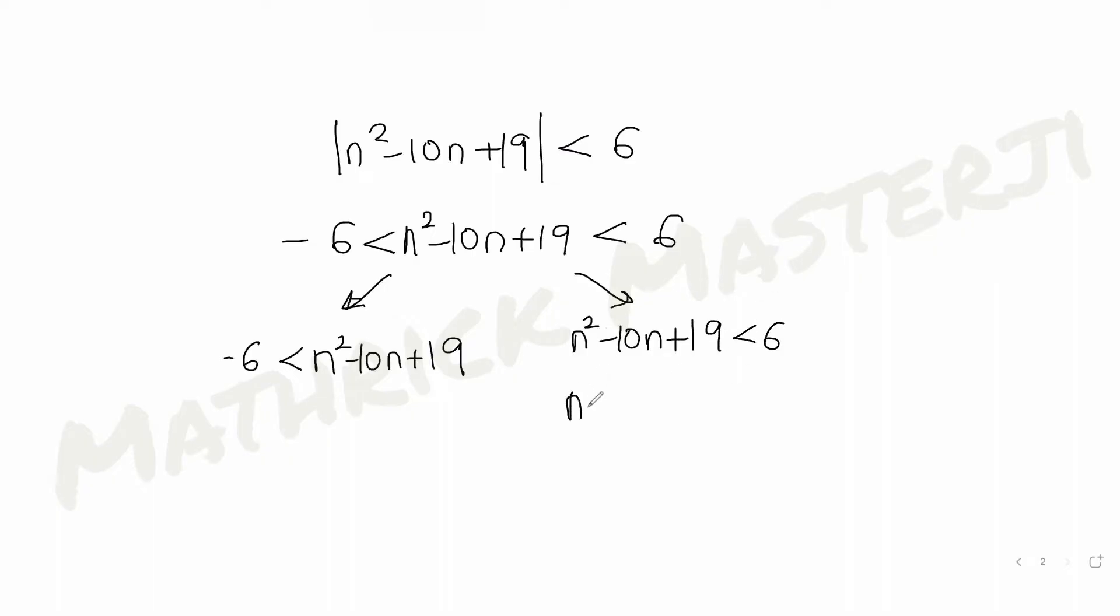One part gives me n square minus 10n plus 19 greater than minus 6, and the other part gives me n square minus 10n plus 19 less than 6. From here, I get n square minus 10n plus 25 greater than 0 and n square minus 10n plus 13 less than 0.